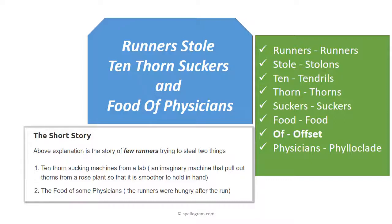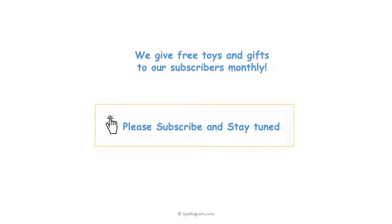You don't have to remember the other words if you can just use them as they are. You don't have to spend a lot of time to memorize because this is just a story of some runners stealing some thorn sucking machines and the food of some physicians. So it's really easy to remember. I hope this trick will help you to remember the stem modification very quickly. And that's all for now. If you enjoyed our trick, do hit a like and subscribe to our channel for more tricks. You can also request in the comments if you need tricks on any particular topic. Thanks, guys. Bye.